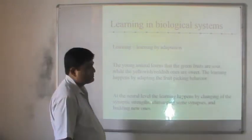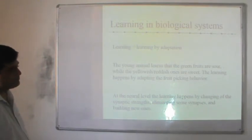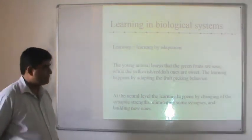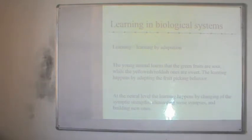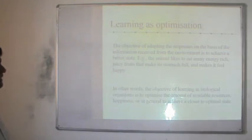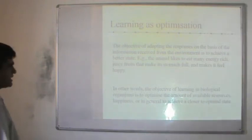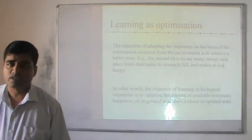Learning in the biological system happens by adaptation. A young animal learns that green fruits are sour while yellowish or reddish ones are sweet, adapting its fruit-picking behavior. At the neural level, learning happens by changing the synaptic strength, eliminating some synapses and building new ones. The objective of adapting responses based on environmental information is to achieve a better state — to optimize available resources and achieve a closer optimal state.